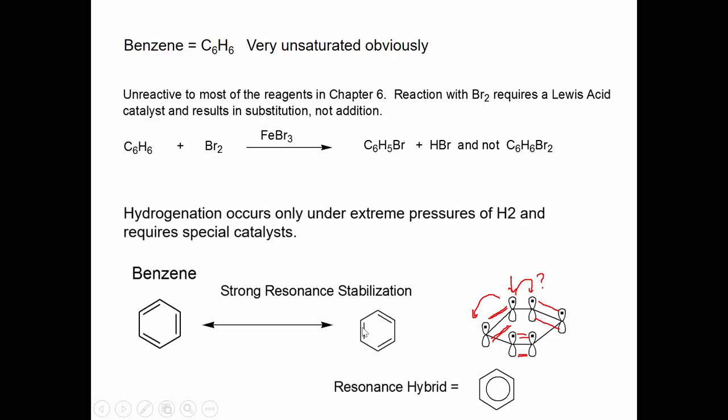It's thought that we can demonstrate this resonance energy by drawing this resonance hybrid right here, a hexagon with a circle inside of it. And this is the way you'll very frequently see benzene written. I always say write benzene this way if you want to write a reaction mechanism, which we'll be doing in chapters 11 and 12. Draw benzene this way if you want to understand its spectral properties, which we'll be doing in chapter 13.